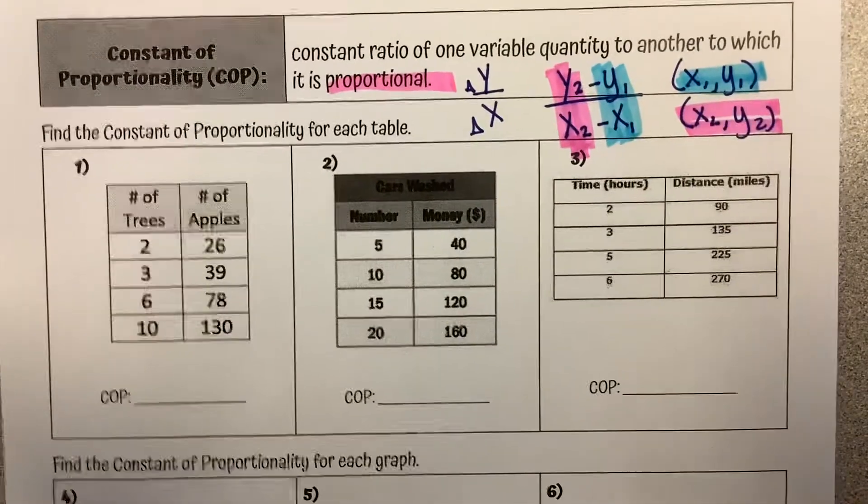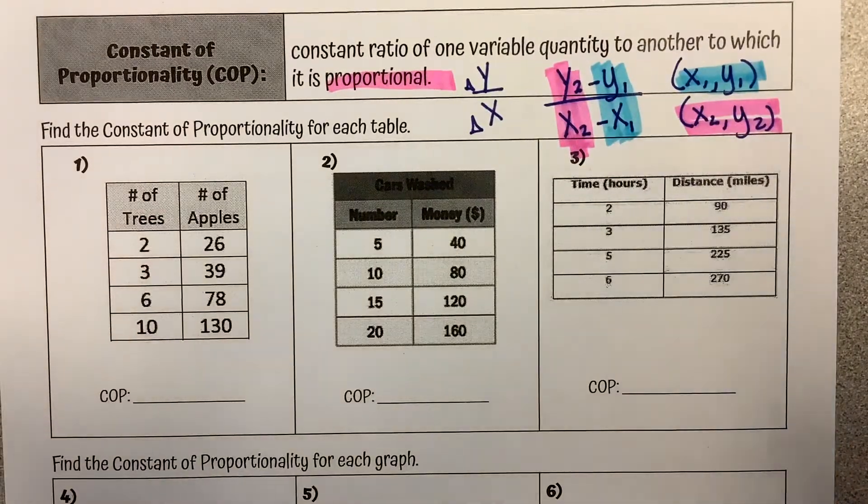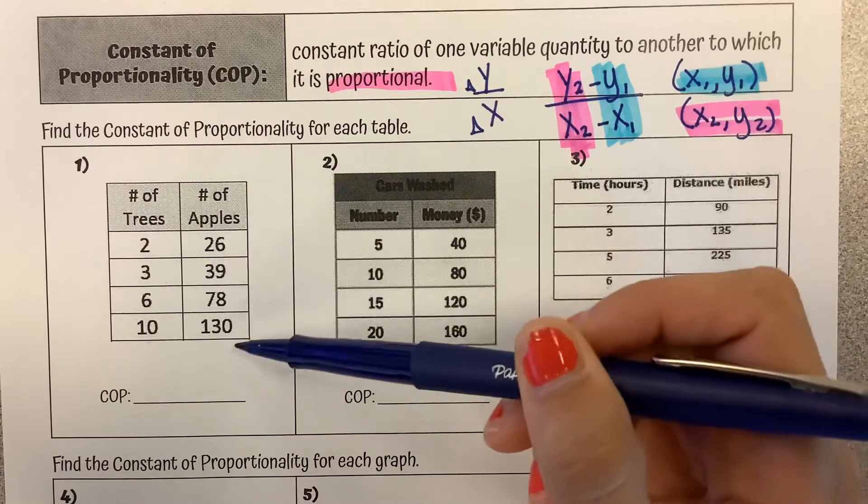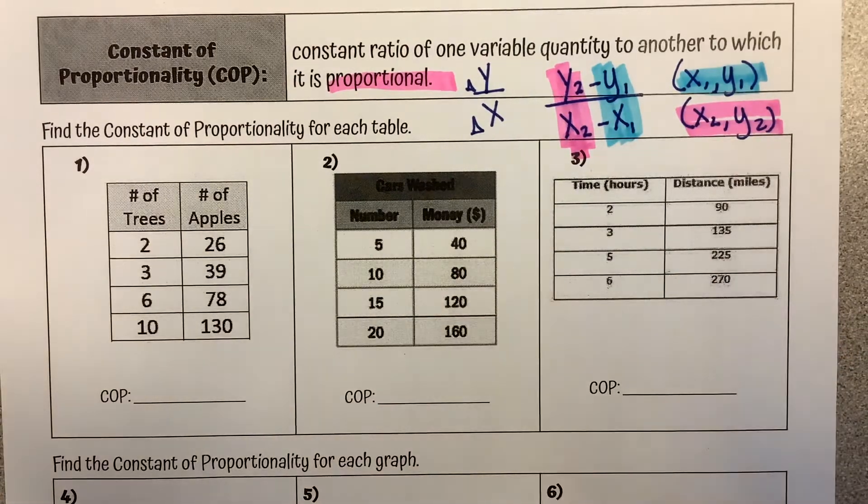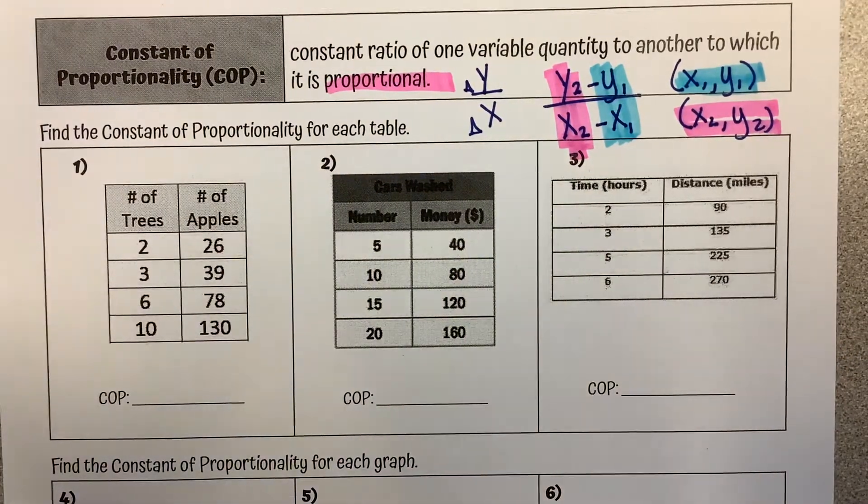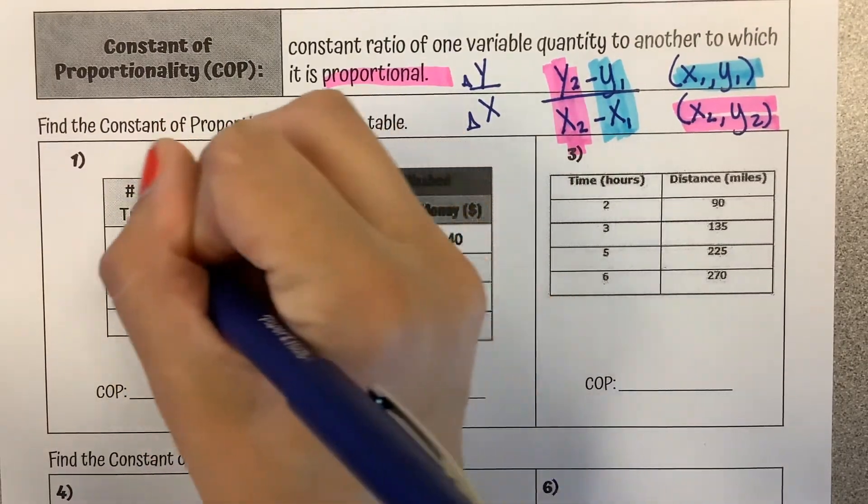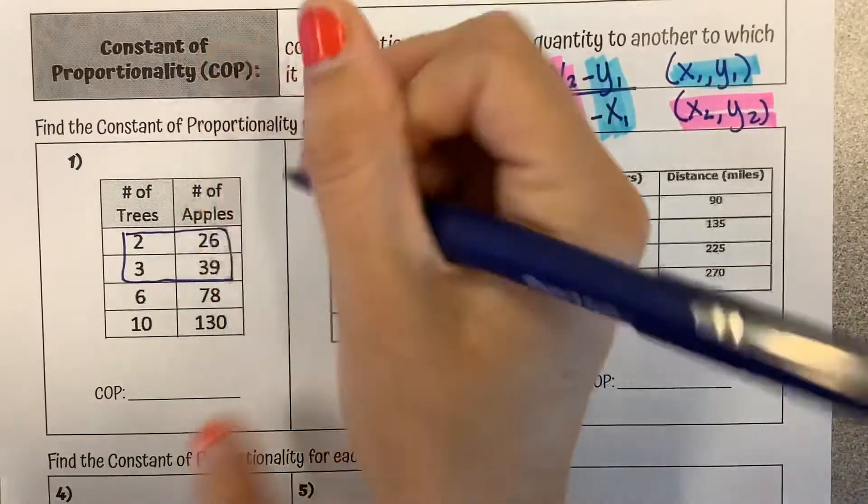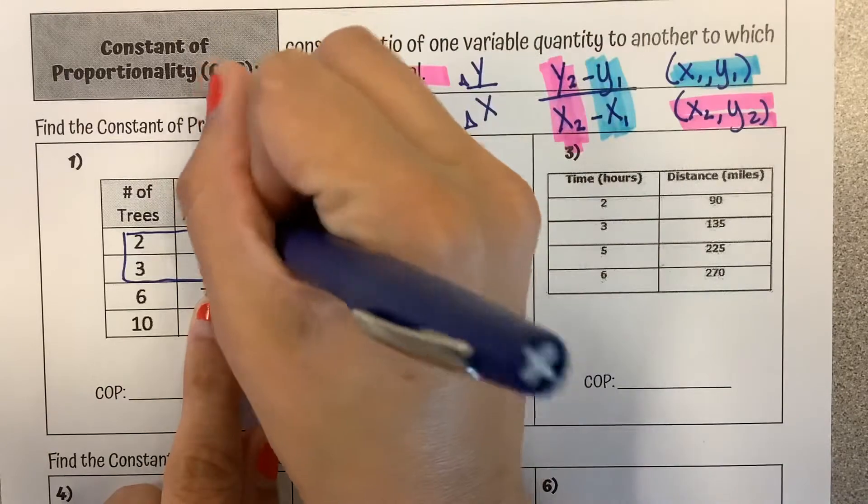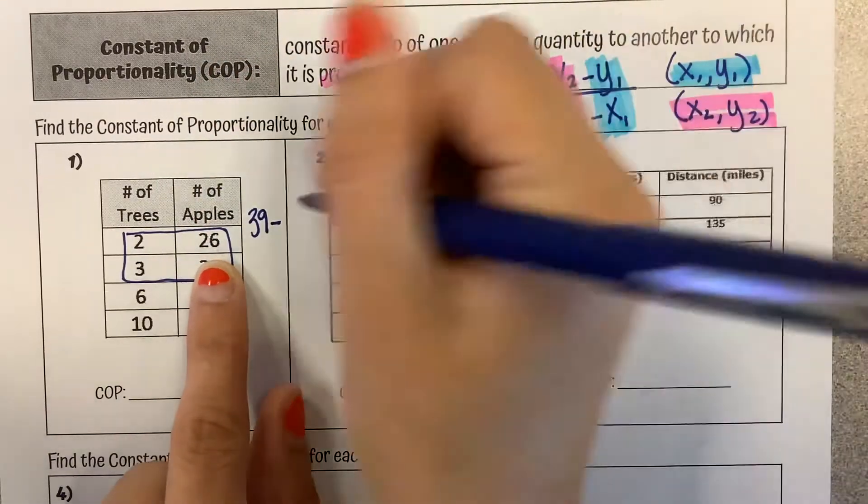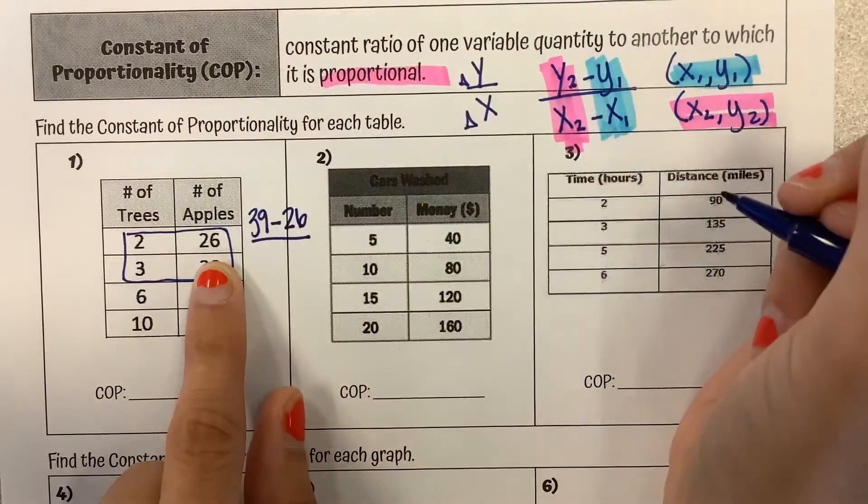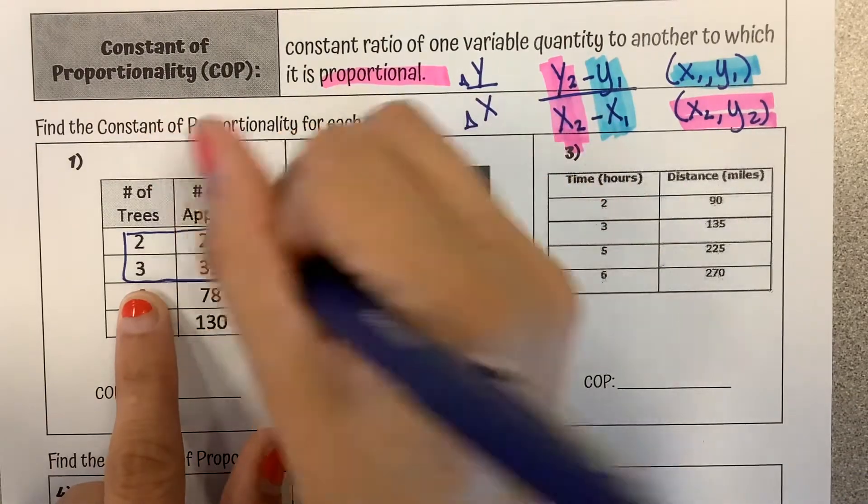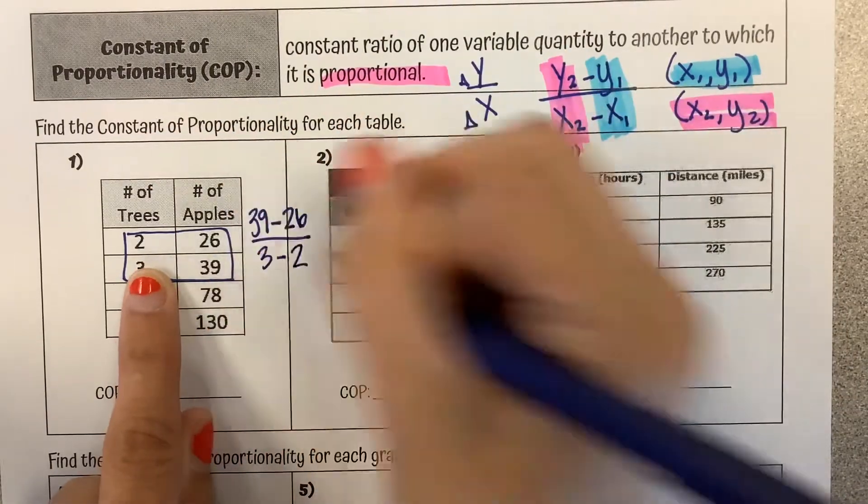So let's look at how we find the constant of proportionality given a table. I just need to pick two points. I can pick any two points here. I could do 2, 26. I could do 10, 130. I could do 6, 78. I like to pick the smallest ones. So I'm just going to pick these two smallest ones, and I'm going to plug it into this formula. So I'm going to take my bigger y, which is 39, minus my smaller y of 26, over, if I started with 39 for my y, I need to start with 3 for my x, minus my other x of 2.